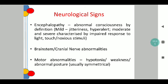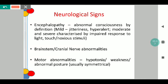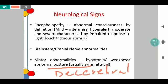Encephalopathy by definition is abnormal consciousness. It is subclassified into mild and severe. Mild encephalopathy will be characterized by jitteriness along with the hyperalert stage. Moderate or severe encephalopathy is characterized by impaired response to light, touch or noxious stimuli, and will also be associated with brainstem injuries or cranial nerve abnormalities and motor abnormalities such as hypotonia, weakness, or abnormal posture. The most common abnormal posture we see is a decerebrate posture.